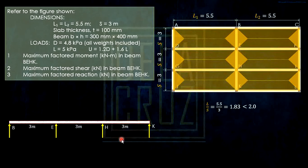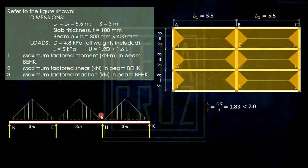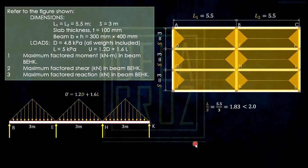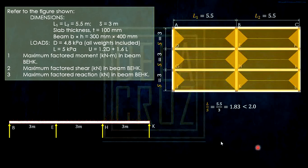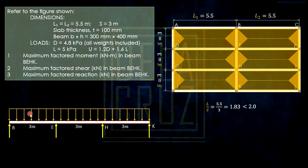The load distribution on beam BEHK is triangular, while if we were to analyze beam DEF, the distribution there would be trapezoidal. This load is composed of the dead load and the live load, and this is the load combination given. For pattern loading, the load we must use should be uniformly distributed load, so we need to convert the triangular loads into equivalent uniformly distributed loads.